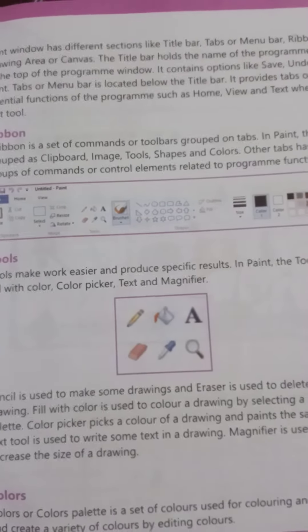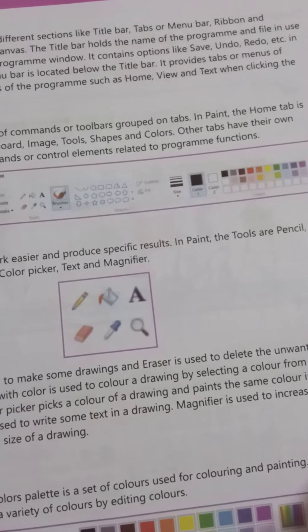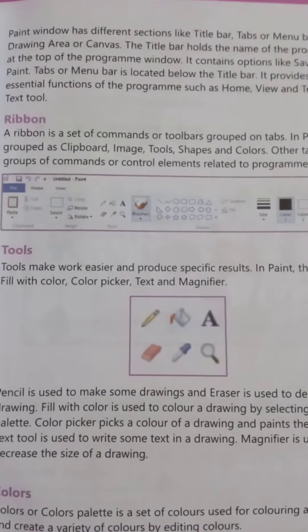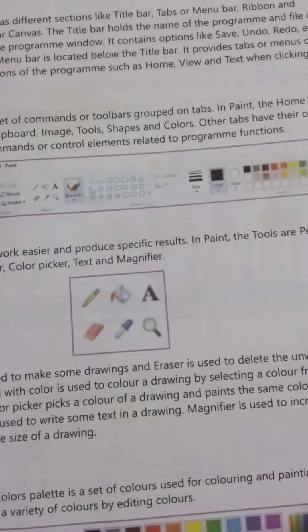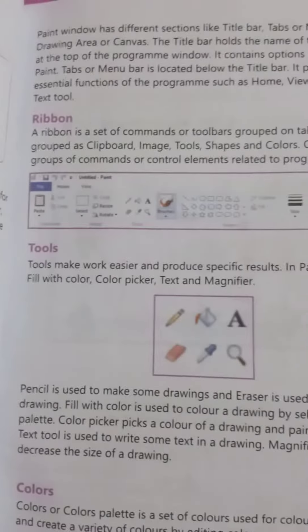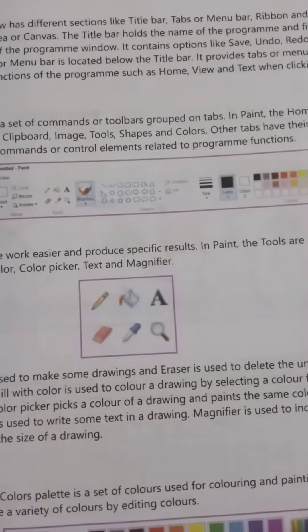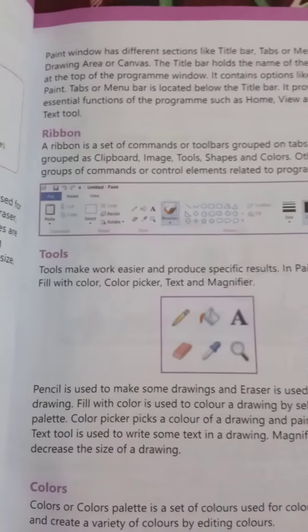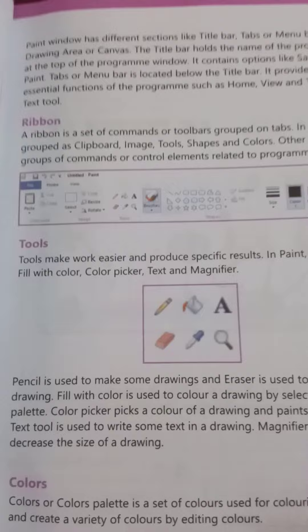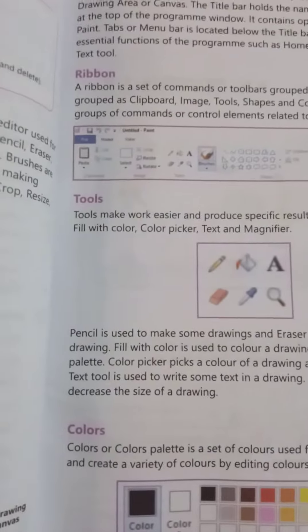The title bar holds the name of the program and file currently in use, at the top of the program window. It contains options like save, undo, redo, etc. In Paint, the tab menu bar is located below the title bar and provides tab menus of essential functions such as Home, View, and Text. In the next class, we will learn about the ribbon, tools, colors, and how to use them.